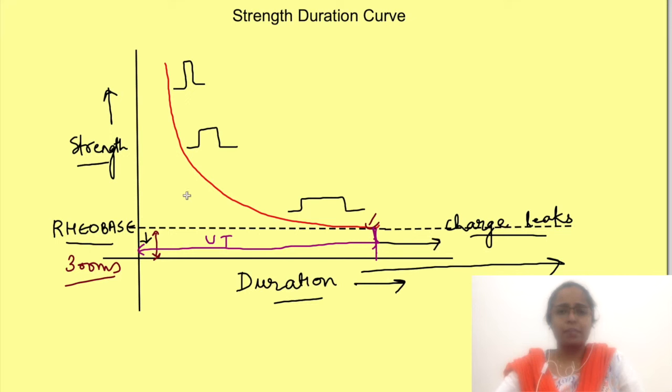So we get an approximate rheobase say here, double its strength so it will be till here and chronaxie is duration for which this strength is given. So we just extend this line to the graph, drop a perpendicular and see how much duration is needed. So this much duration is chronaxie.